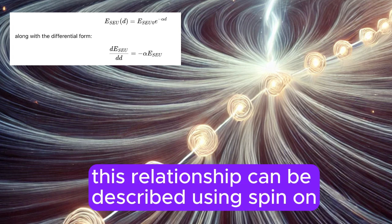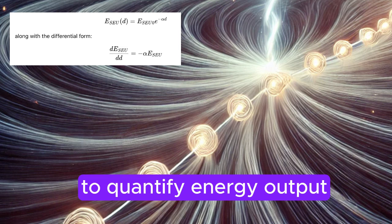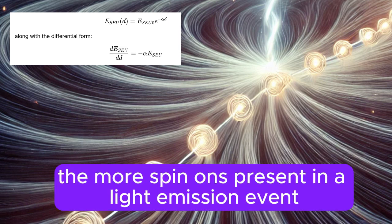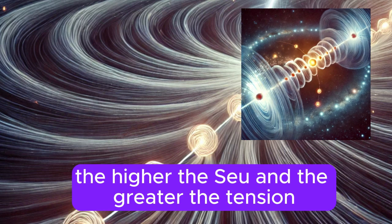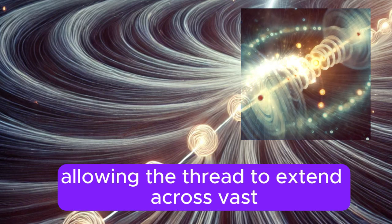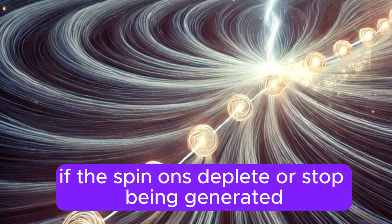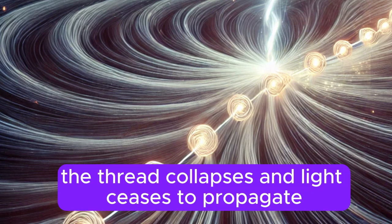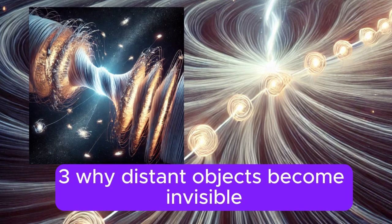This relationship can be described using spin-on energy units (SEU) to quantify energy output. The more spin-ons present in a light emission event, the higher the SEU and the greater the tension, allowing the thread to extend across vast cosmic distances. If the spin-ons deplete or stop being generated, the thread collapses and light ceases to propagate.